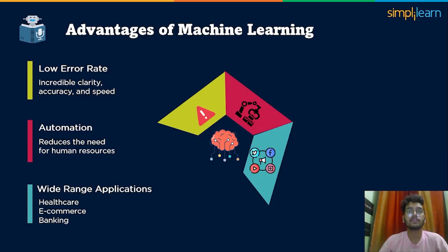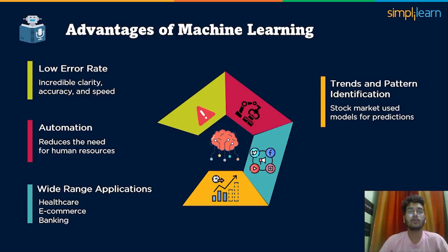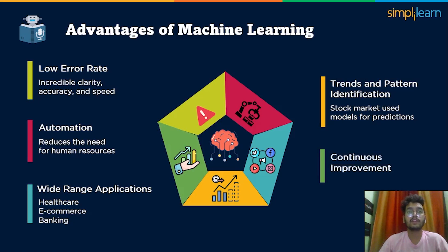In healthcare, machine learning is used for screening or to predict health risks. In education, it is used to give each student an individual educational experience. In banking, it enables more accurate reporting by automating credit risk for both banks and customers. The fourth advantage is trends and patterns identification — for example, the stock market uses machine learning prediction models to predict trends and patterns for company stocks and other financial assets. The last advantage is continuous improvement: using machine learning, you can see continuous improvement in your results, as it is capable of learning from the information we provide.